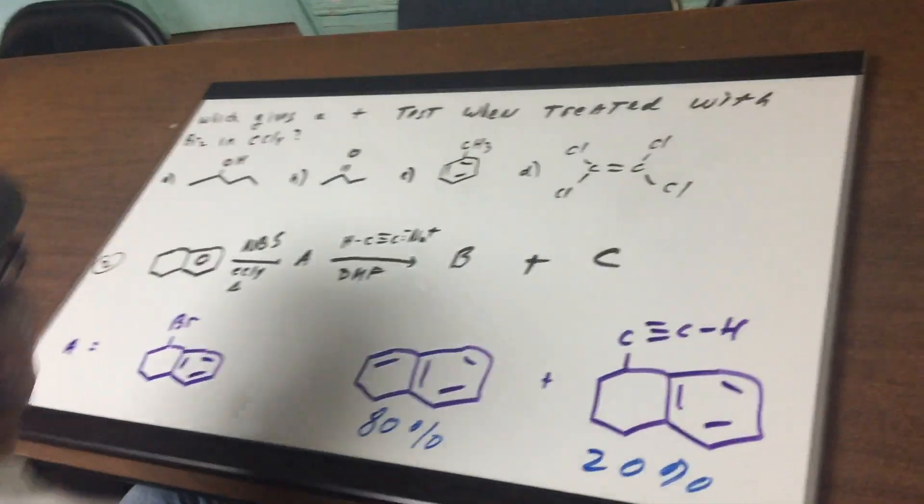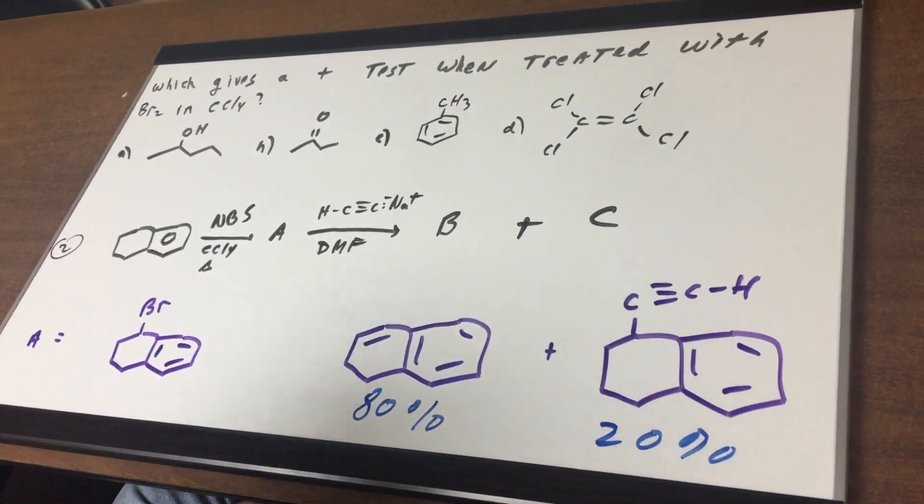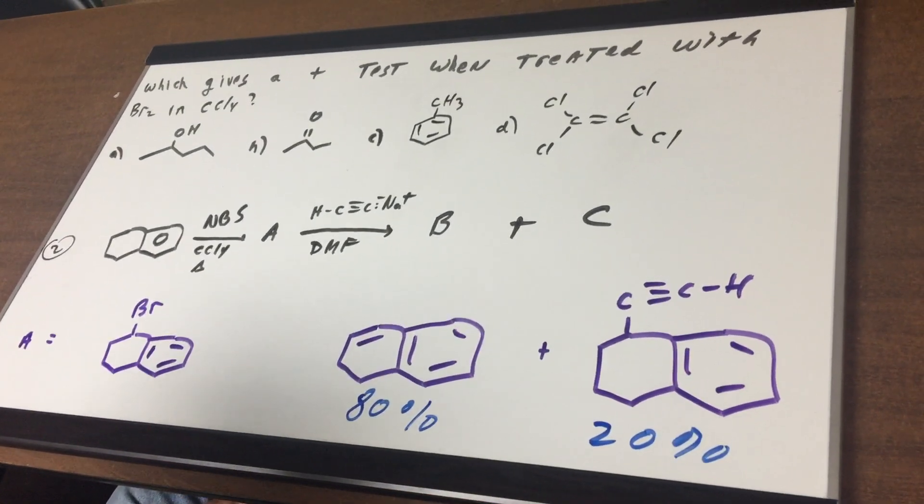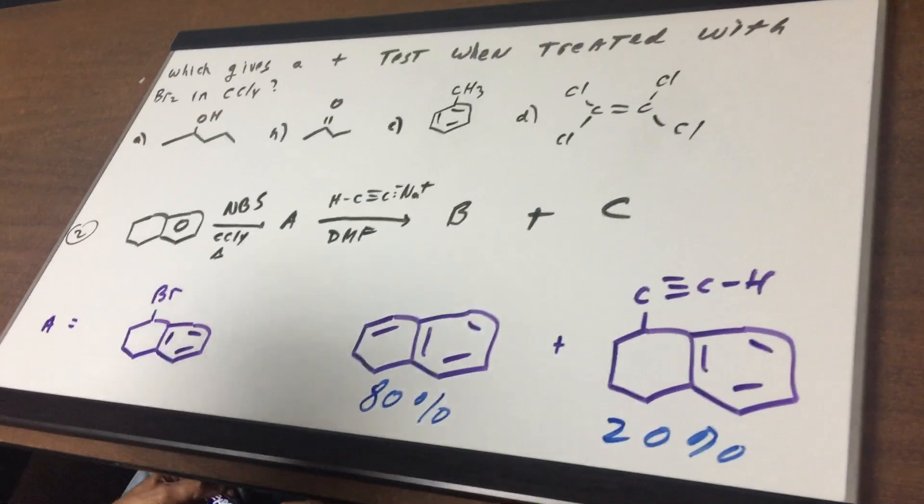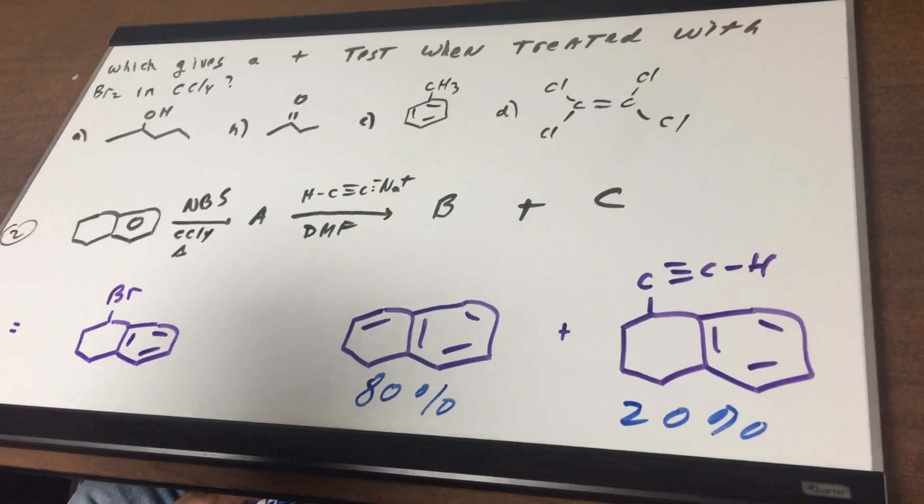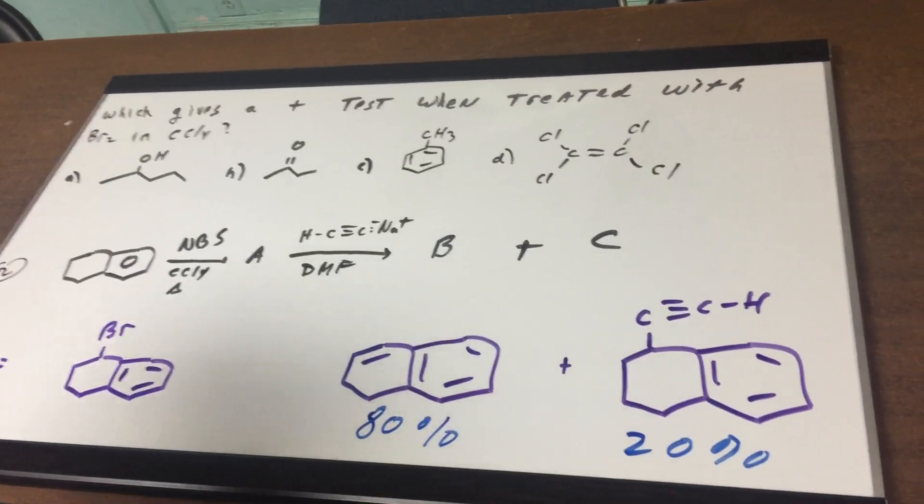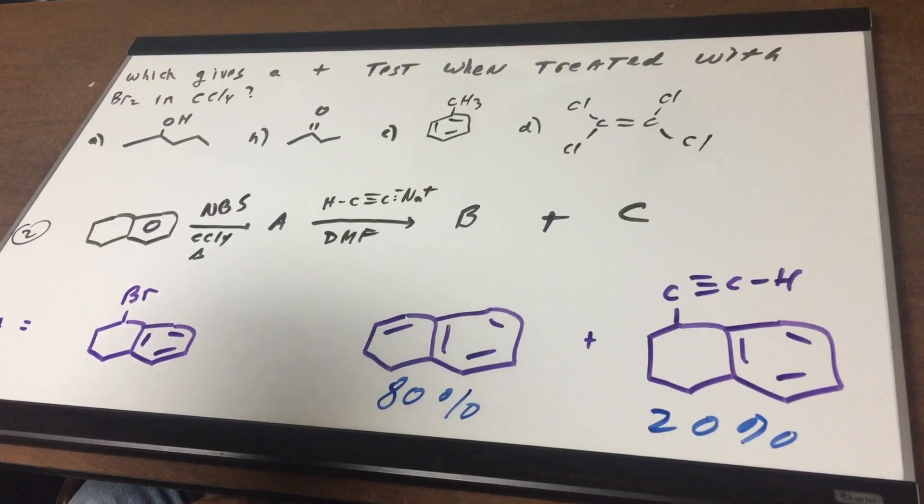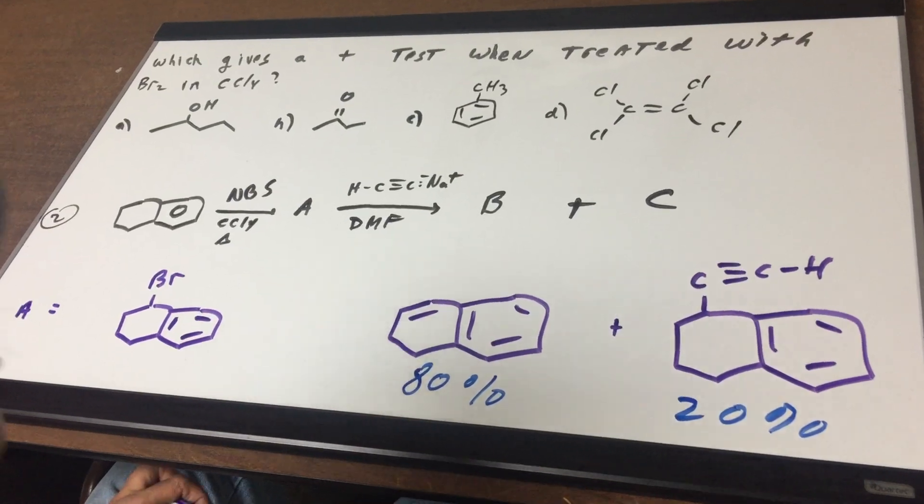The first part of this question is going to have three parts. Which gives a positive test when treated with bromine and CCL4? Well, the bromine and CCL4 is a test in which you would add a compound to a solution and look for a color change. You would see the orange-brown color become colorless. It is a test for double or triple bonds between carbons.